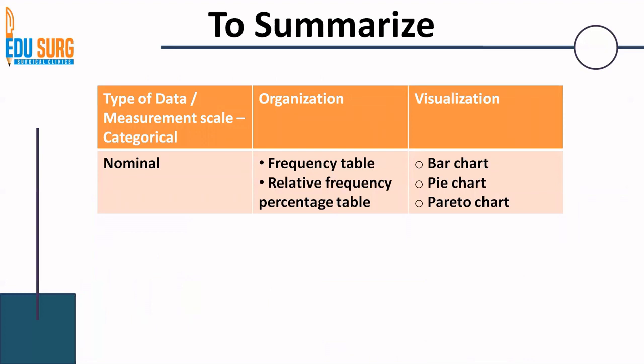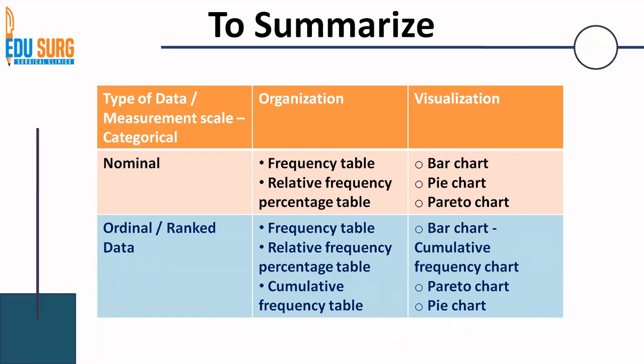To summarize these two categorical data types: for nominal data, we can organize using a frequency table and relative frequency percentage table, and for visualization we can use bar chart, pie chart, or Pareto chart. For ordinal or ranked data, we can organize them into frequency table, relative frequency percentage table, and also a cumulative frequency table, and for visualization we also have a cumulative frequency chart. That is how categorical data is organized and visualized. In the next part of this video, we will see how the numerical data is organized and visualized. Thank you.